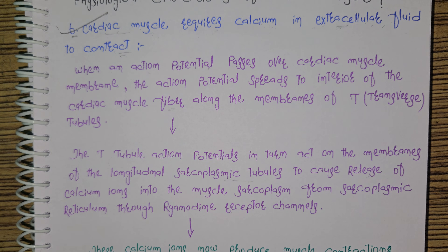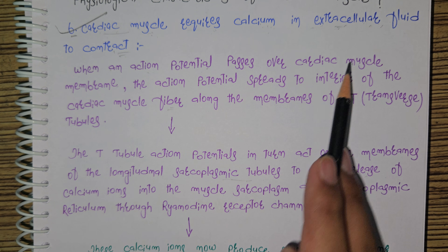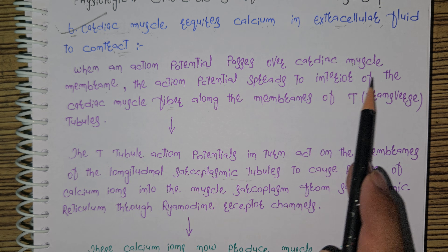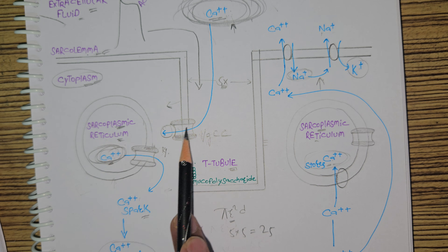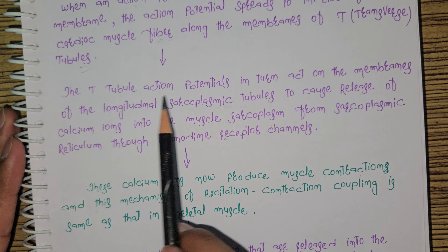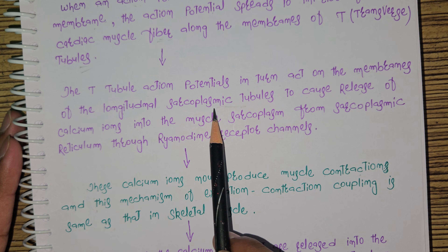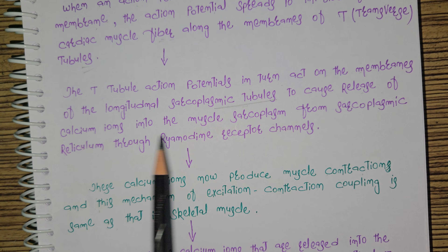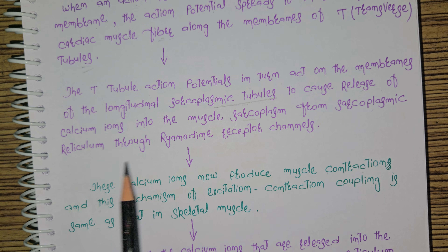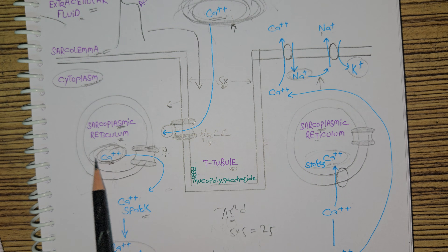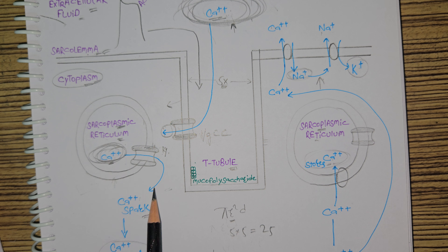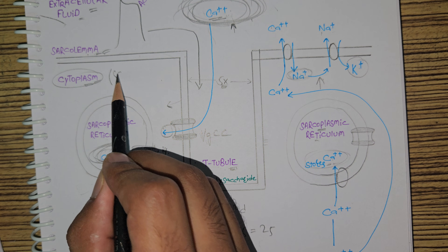From the textbook: when an action potential passes over the cardiac muscle membrane, the action potential spreads to the interior of the cardiac muscle fiber along the membranes of the T-tubules. The T-tubule action potential in turn acts on the membranes of the longitudinal sarcoplasmic tubules to cause the release of calcium ions into the muscle sarcoplasm from the sarcoplasmic reticulum through ryanodine receptor channels.